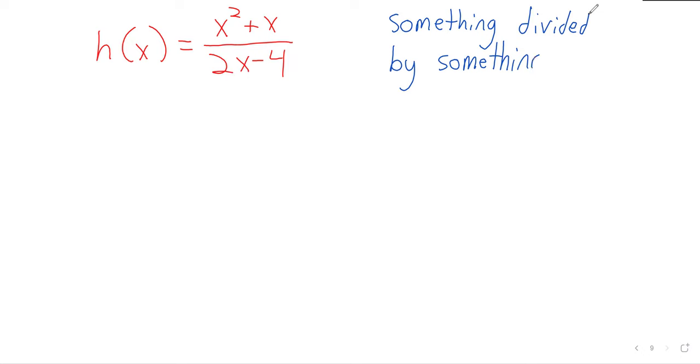If we see a function x squared plus x divided by 2x minus 4, we need to be able to look at this and say, well, there's a bunch of stuff happening here. We've got a square, we've got a plus, we've got a two times, and we've got subtraction. But what we really have here is something divided by something else.